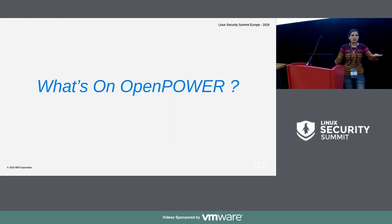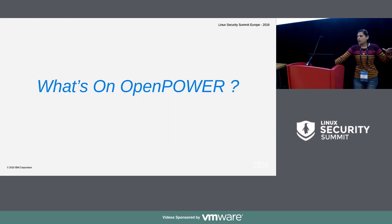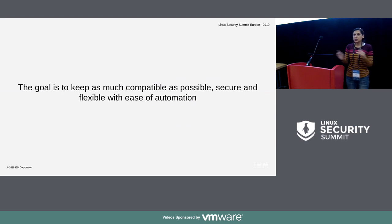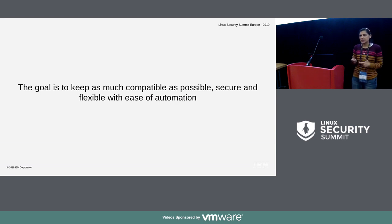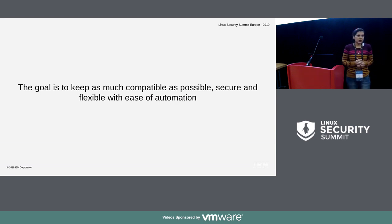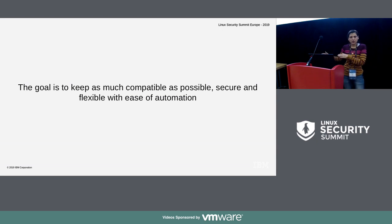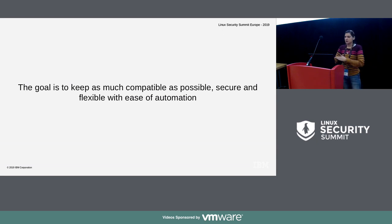Now let's see what is on OpenPower. The main goal is to keep it as compatible as possible, keep it secure, keep it flexible so that it can be extended with ease of automation. Let's go through this journey of key management on OpenPower and see if we are able to achieve this goal.